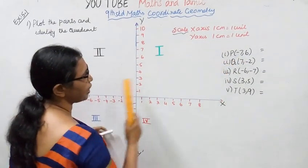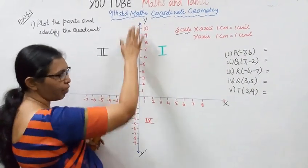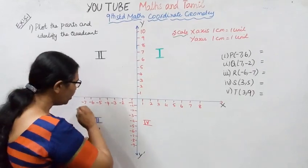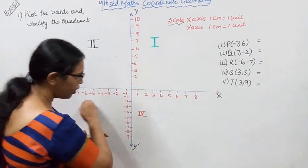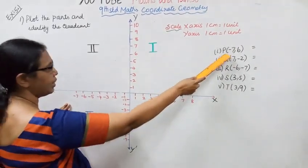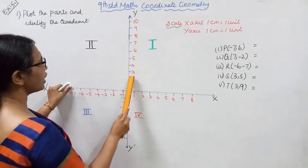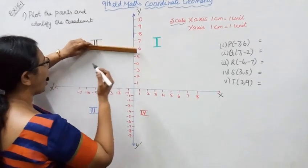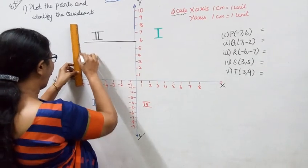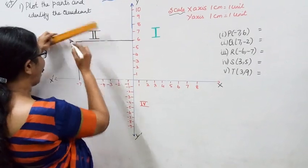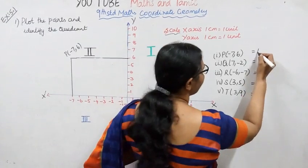Point P is at (-7, 6). Minus 7 on the X-axis, plus 6 on the Y-axis. Since X is negative and Y is positive, P is in the second quadrant.